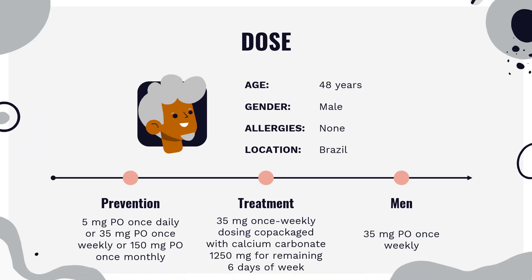Dose — Postmenopausal osteoporosis treatment and prevention: 5 mg PO once daily, or 35 mg PO once weekly, or 150 mg PO once monthly. The 35 mg once-weekly dosing is co-packaged with calcium carbonate 1,250 mg for the remaining 6 days of the week.